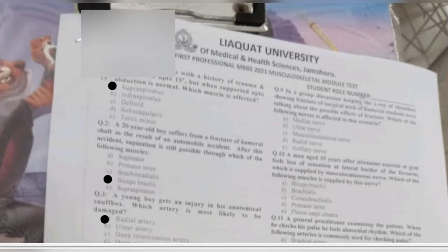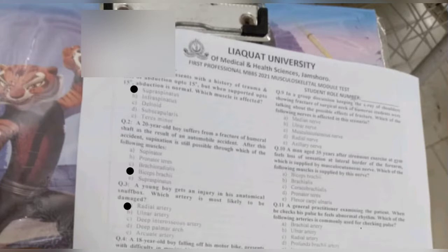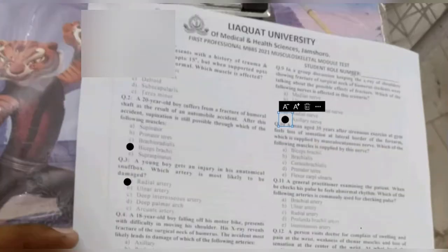Question 9: an X-ray of the shoulder shows fracture of the surgical neck of the humerus. Which nerve is affected — median nerve, ulnar nerve, musculocutaneous nerve, radial nerve, or axillary nerve? In fracture of the surgical neck of the humerus, remember there is always damage to the axillary nerve because the whole area is supplied by it. Damage leads to paralysis of the deltoid as well as teres minor muscle.